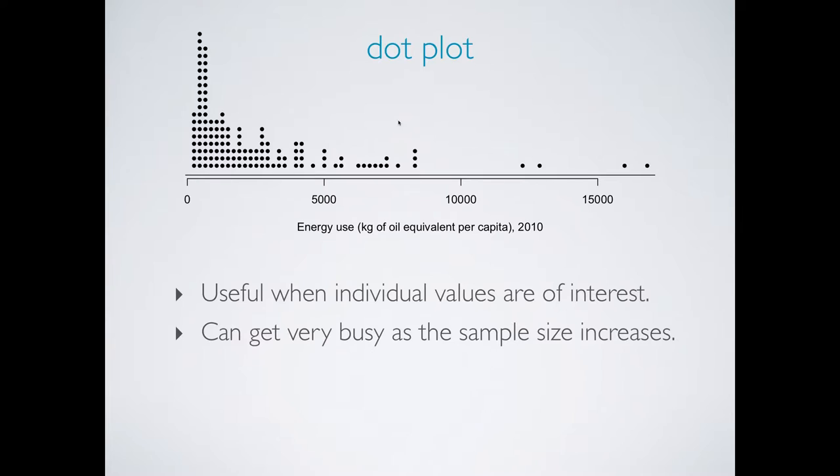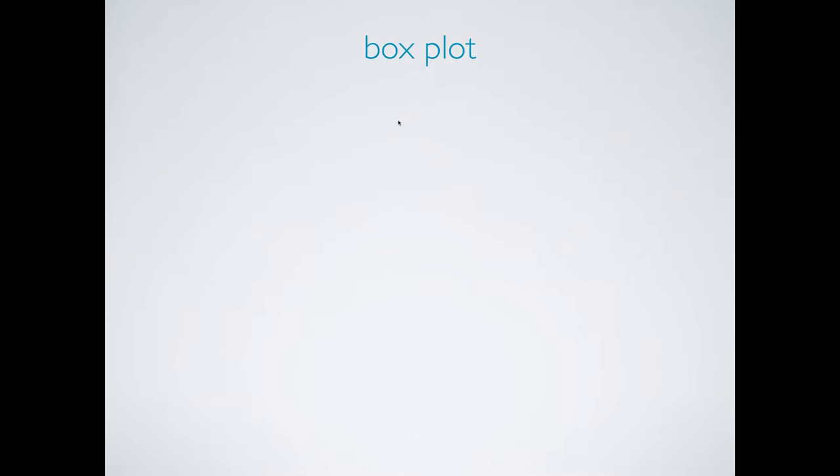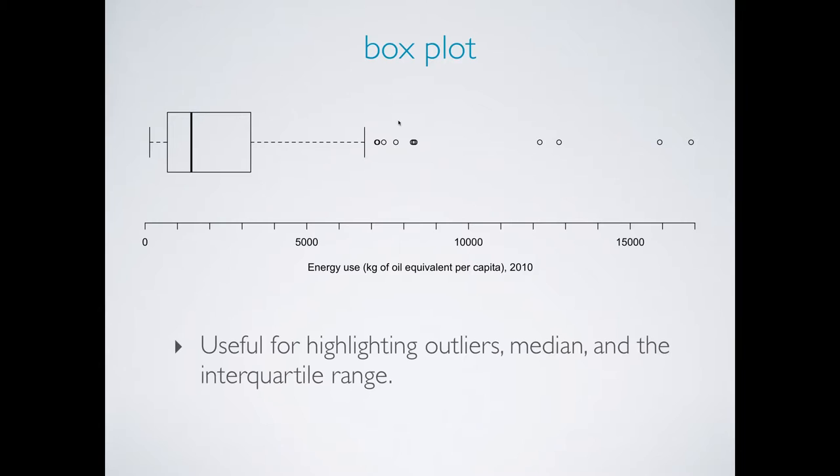Another visualization technique that's especially useful for highlighting outliers is a box plot. A box plot also readily displays the median, that's the thick line here, and the interquartile range, which is the width of the box. The median energy use here is roughly fifteen hundred kilograms of oil equivalent per capita, and the middle fifty percent of countries use between roughly seven hundred and thirty two hundred kilograms of oil equivalent per capita.